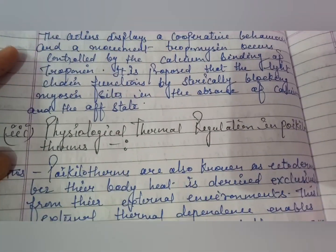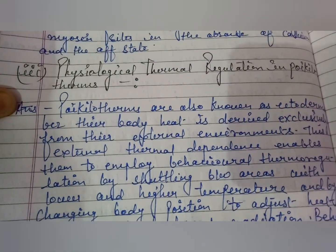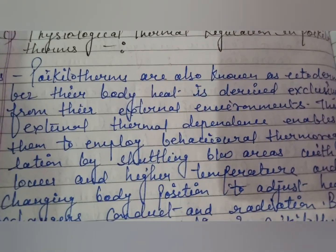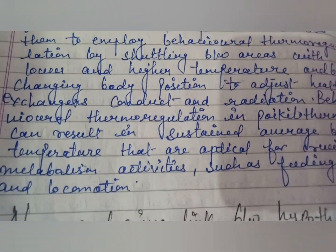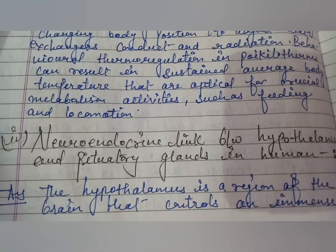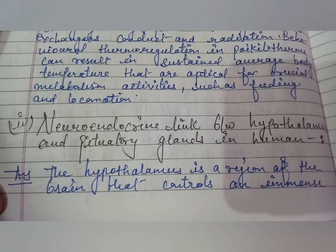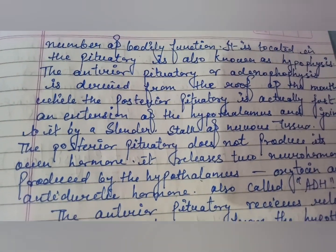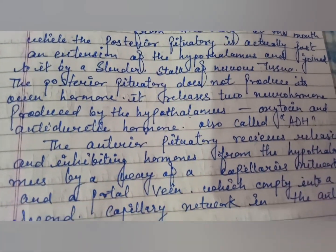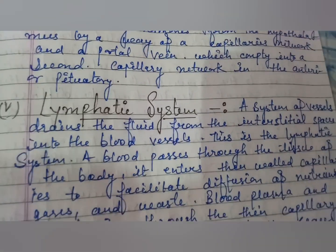The third short note is physiological thermal regulation in poikilotherms, and the fourth is the neuroendocrine link between the hypothalamus and pituitary gland in humans. The fifth short note is the lymphatic system.